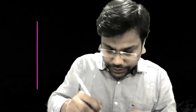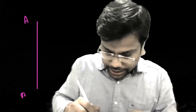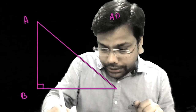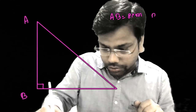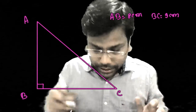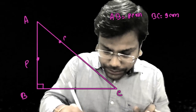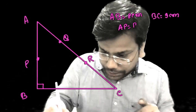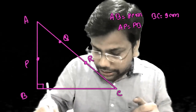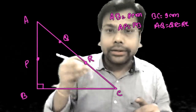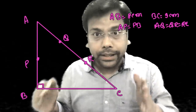So we have a question. We have a right-angle triangle ABC, with the right angle at B. The length of AB is 8 centimeters and the length of BC is 9 centimeters. We have points P, Q, R respectively on AB and BC, such that AP equals PB — that is, P is the midpoint of AB — and AQ equals QR equals RC, meaning Q and R trisect the side BC.